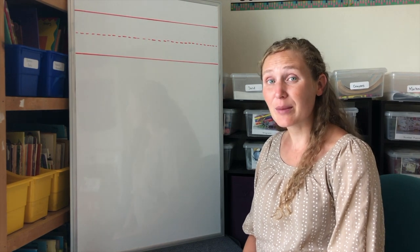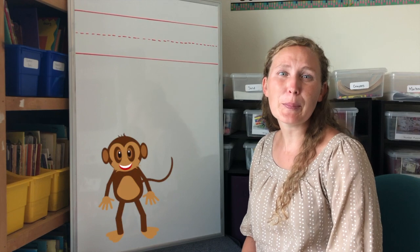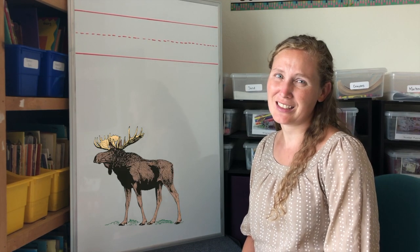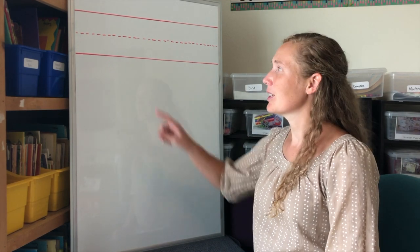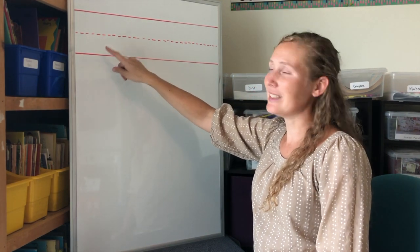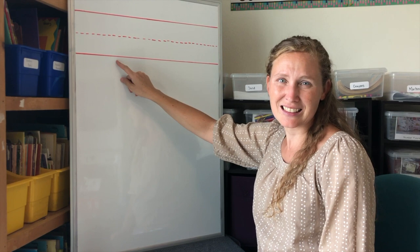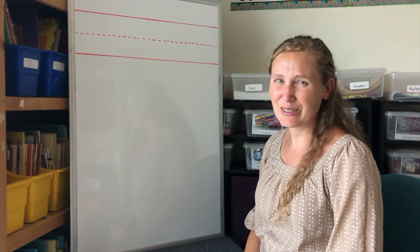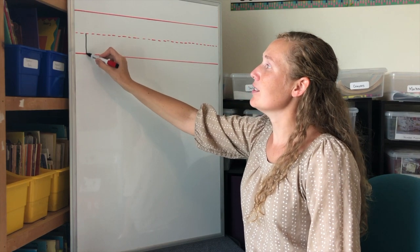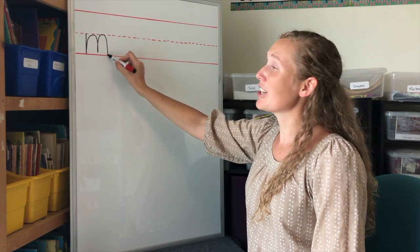Let's start with a lowercase m. Lowercase m is the one we use the most often. We use it for words like monkey or moose. Lowercase m goes between the middle dotted line and the bottom solid line. Let's write one together. Short line down, monkey jump, monkey jump.